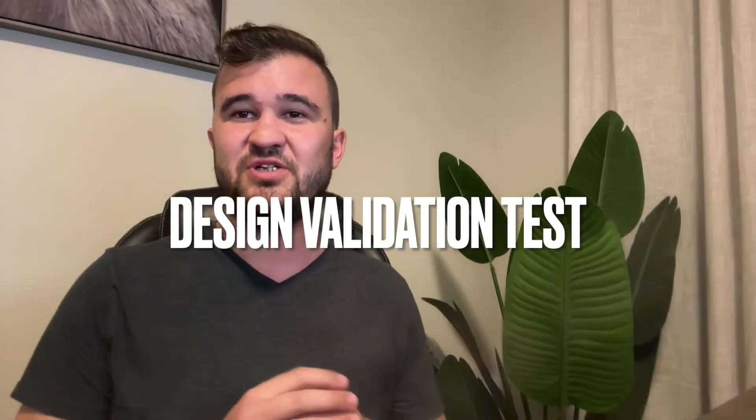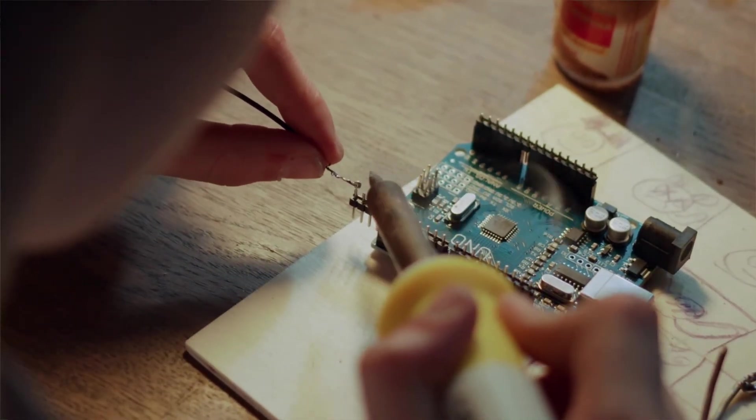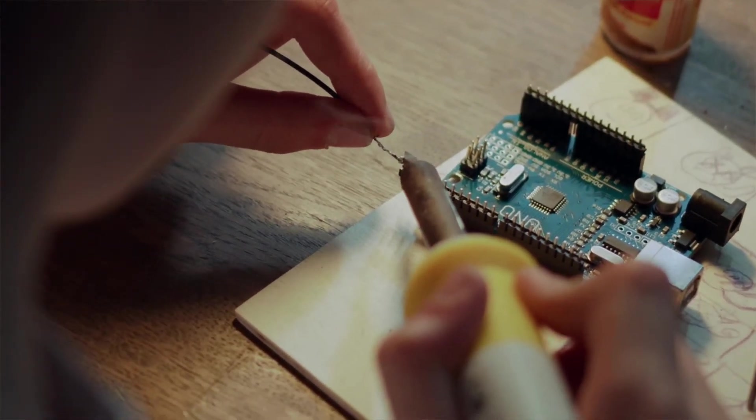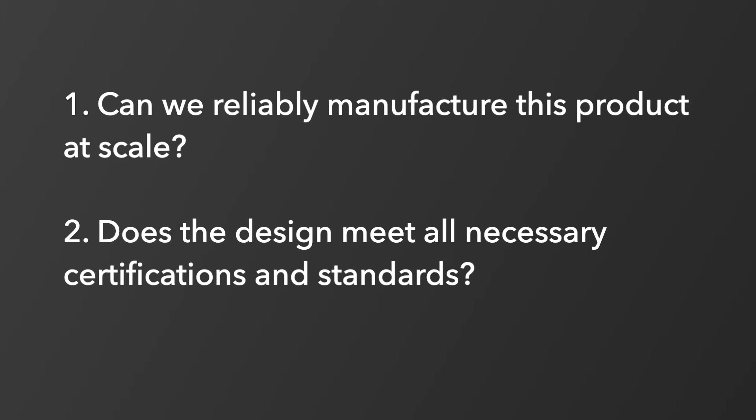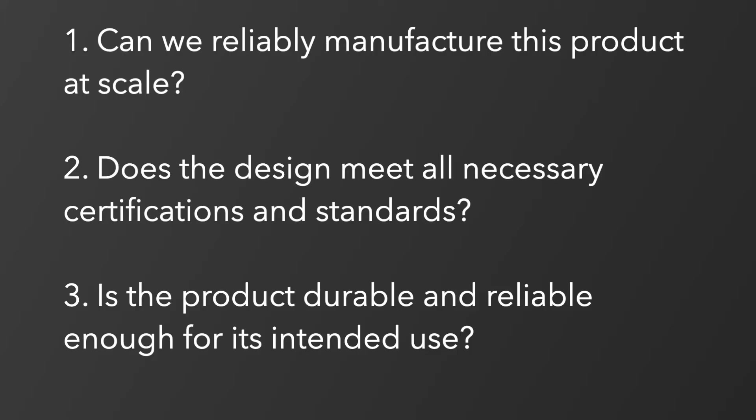Next is Design Validation Test, or DVT. If EVT is about proving that the design works, DVT is all about perfecting the design and moving it towards production. During DVT you're still working with prototypes, but they're much closer to the final product in terms of design, materials, and assembly. DVT answers key questions: Can we reliably manufacture this product at scale? Does the design meet all necessary certifications and standards? Is the product durable and reliable enough for its intended use? The goal is to ensure the product's design is optimized for mass production while still meeting all functional requirements.